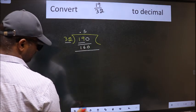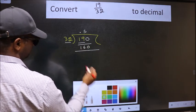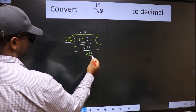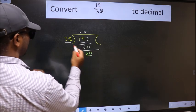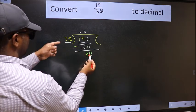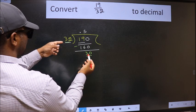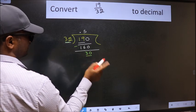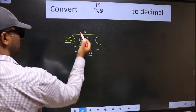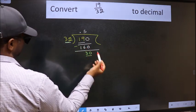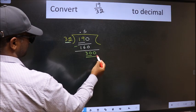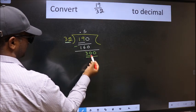Now we should subtract. We get 30. Now 30 and here 32. 30 is smaller than 32, and we already have the decimal, so we can directly take 0. So 300.